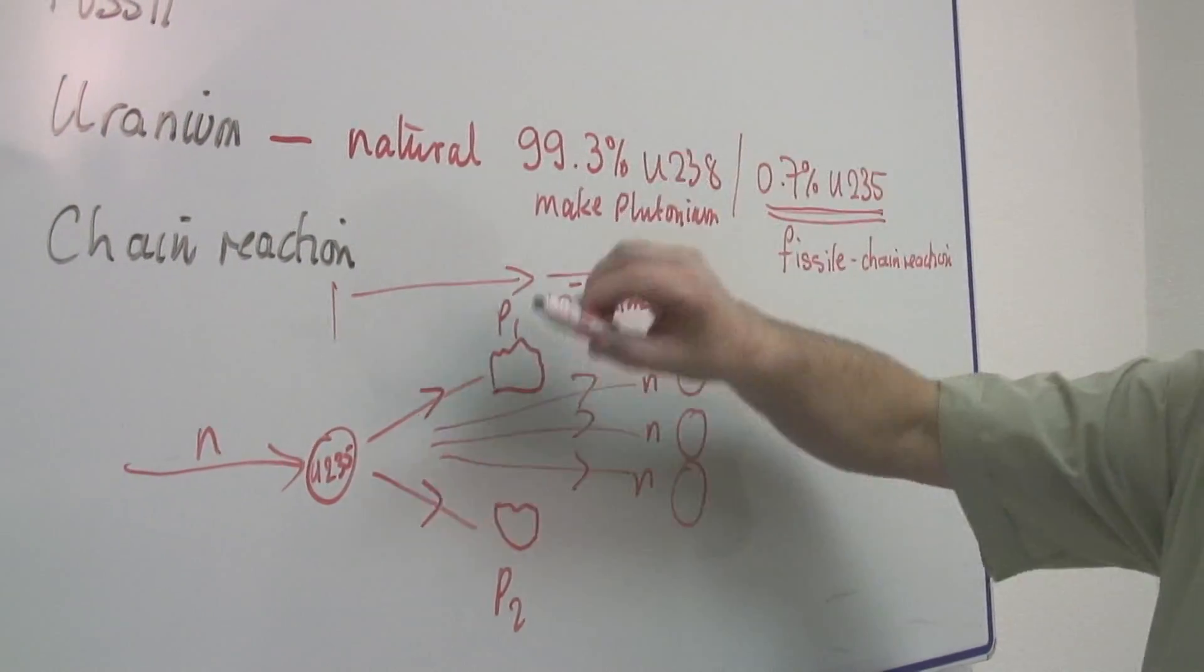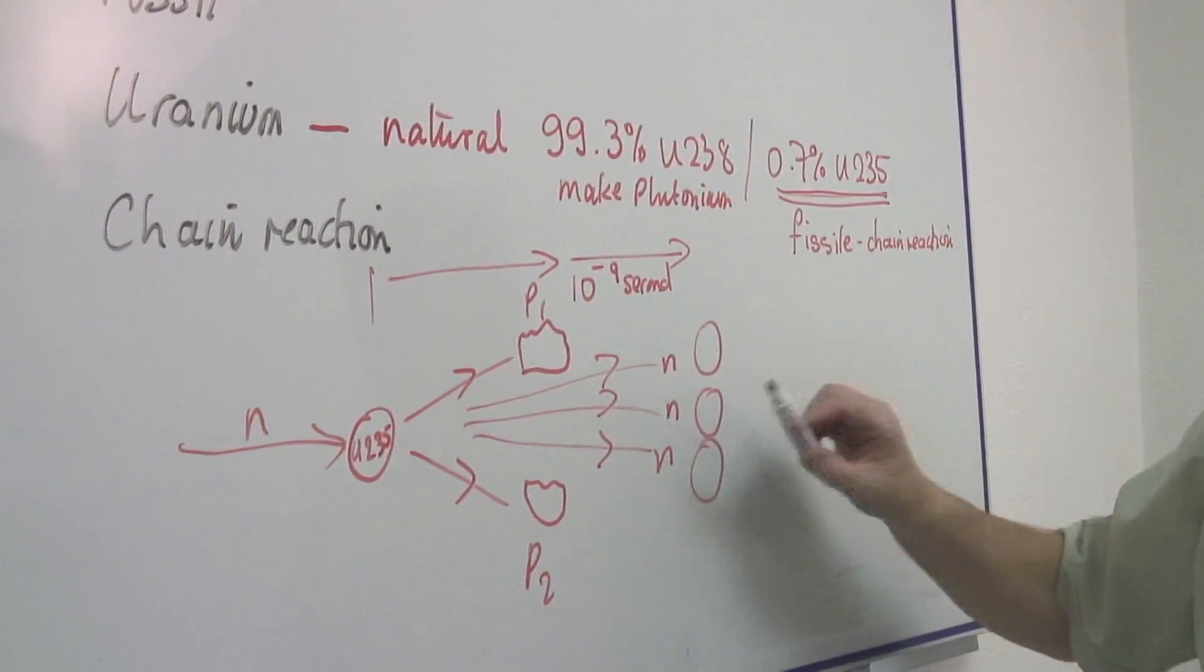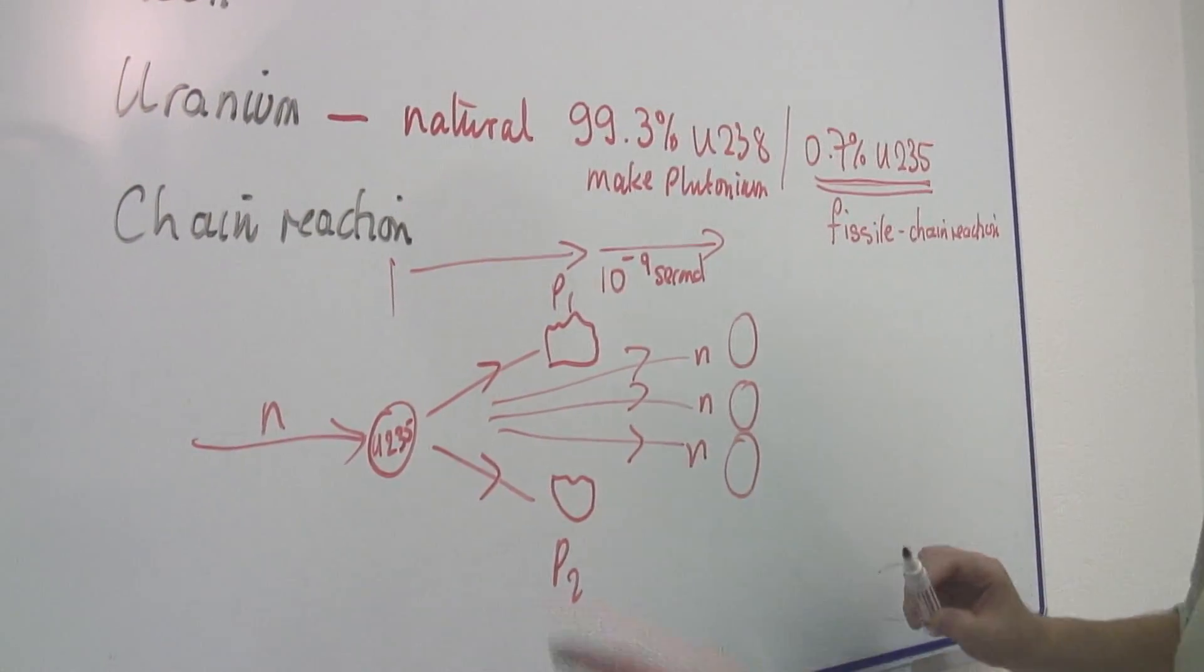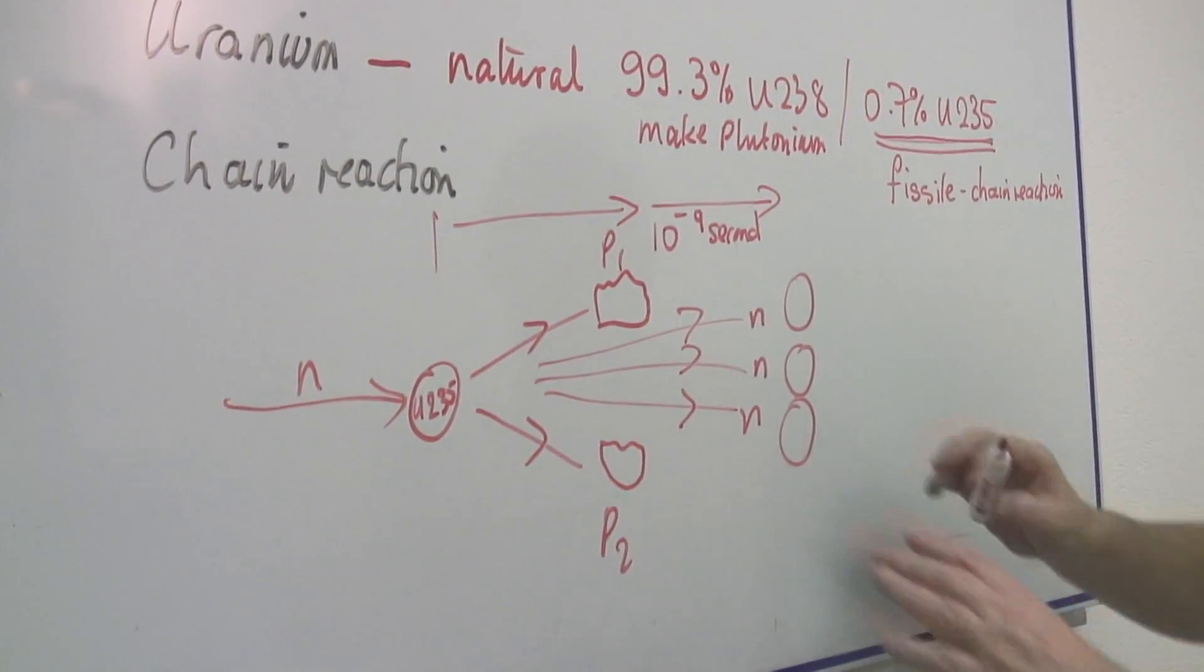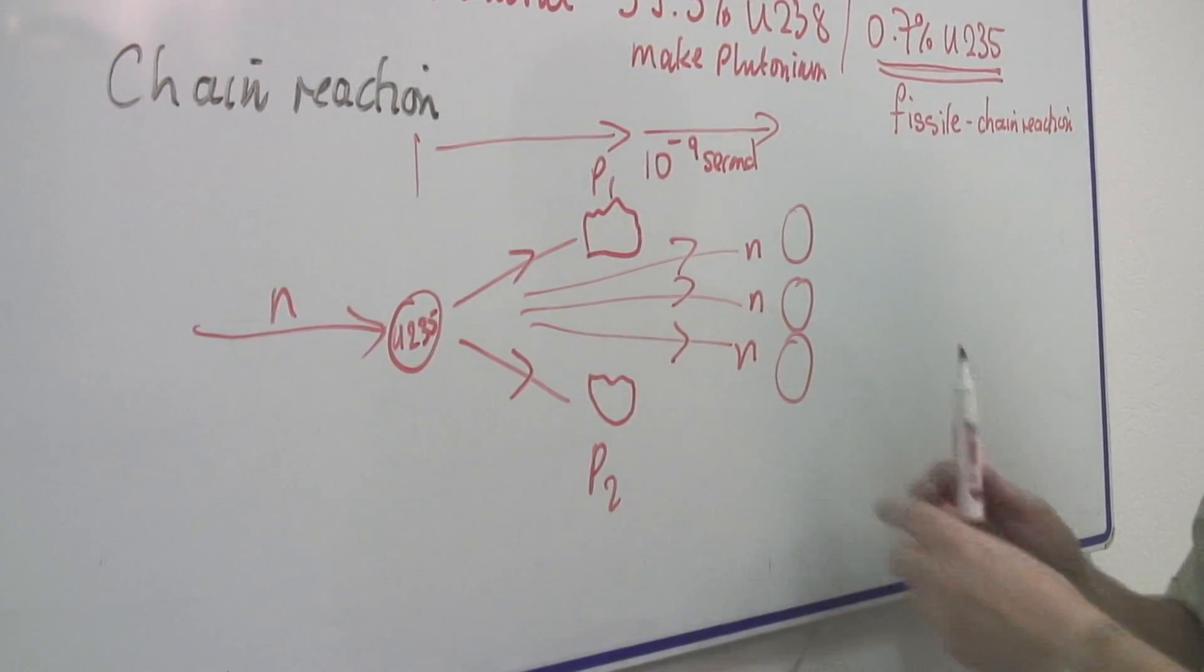All right. So the energy, the actual nuclear energy, comes from uranium-235 and a reaction just of uranium-235.